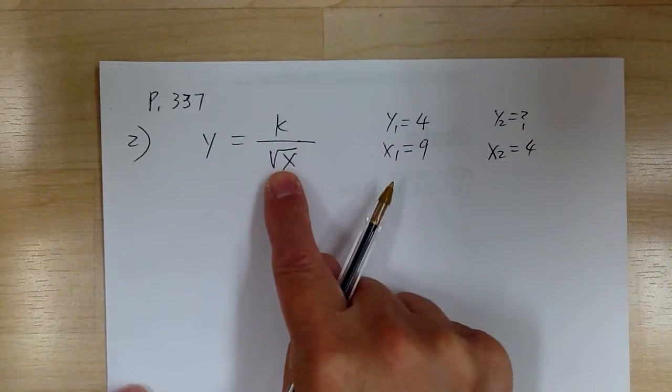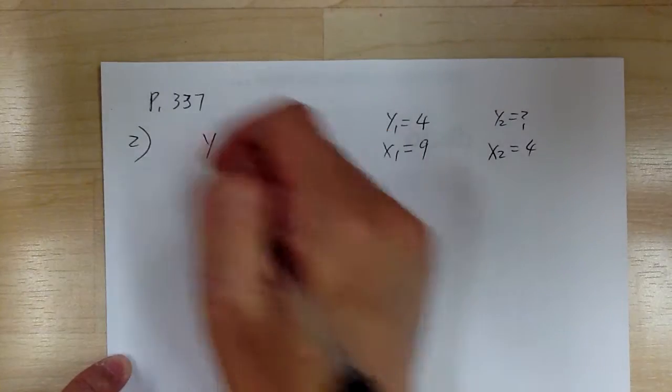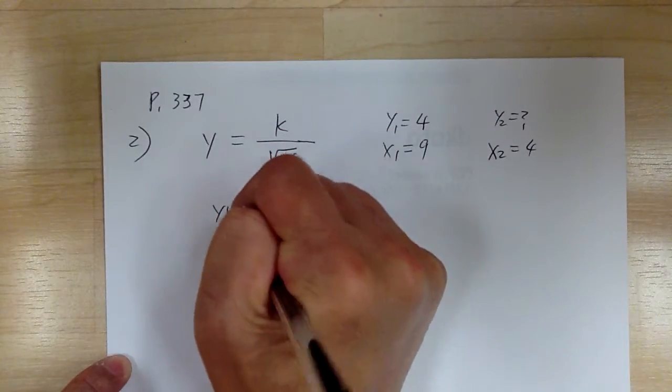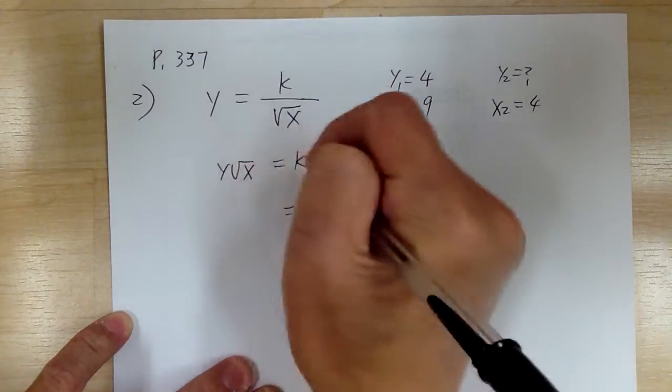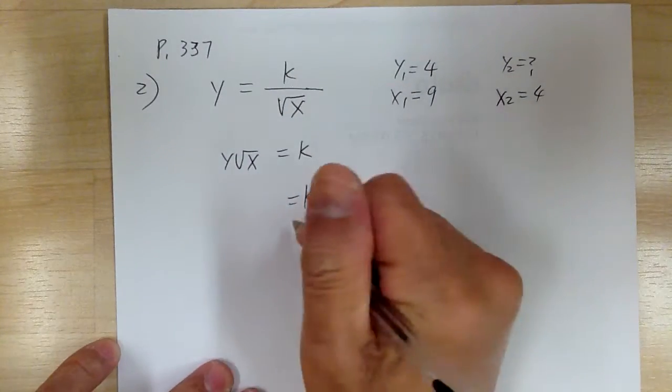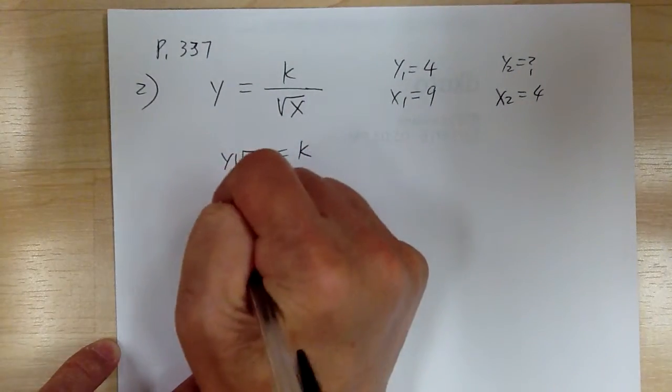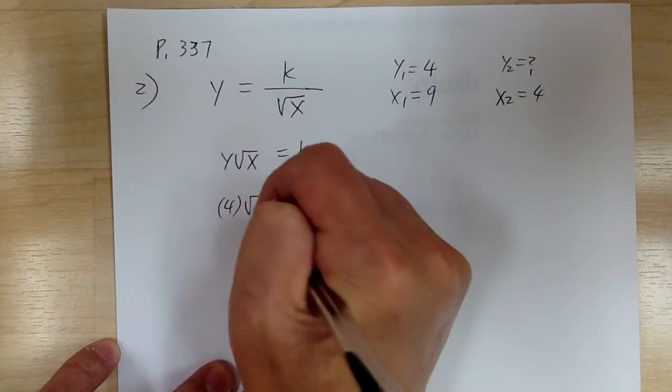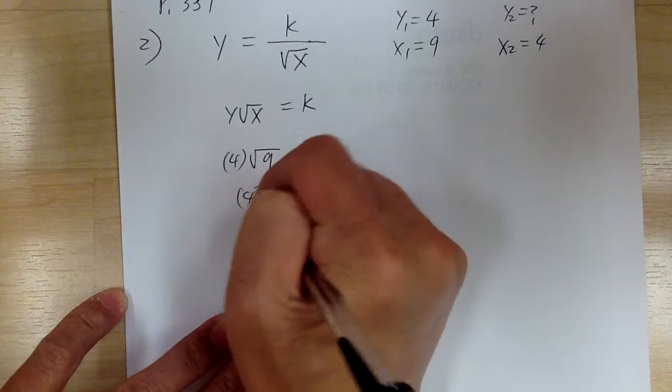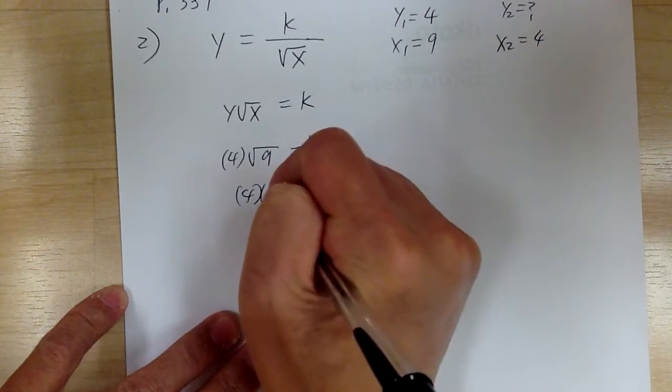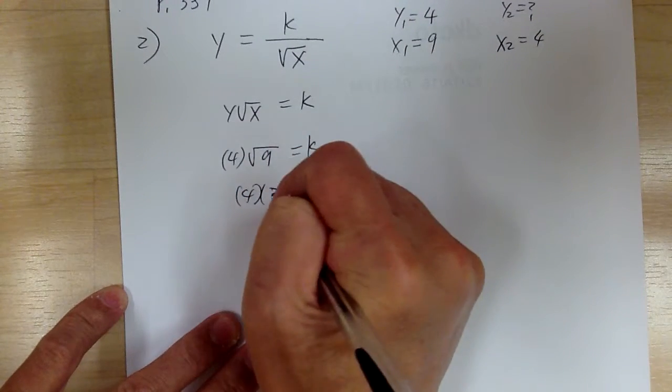So what you want to do is look for the k. So let's go and multiply this over, so you got y times square root of x equal to k. And you can substitute. So k equal to 4 times square root of 9. So k equal to 4 times 3. So k equal to 12.